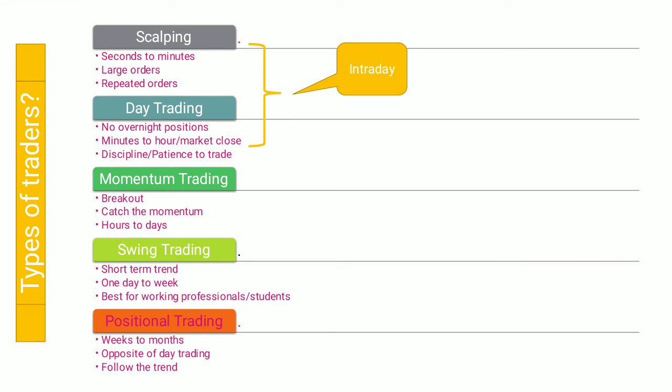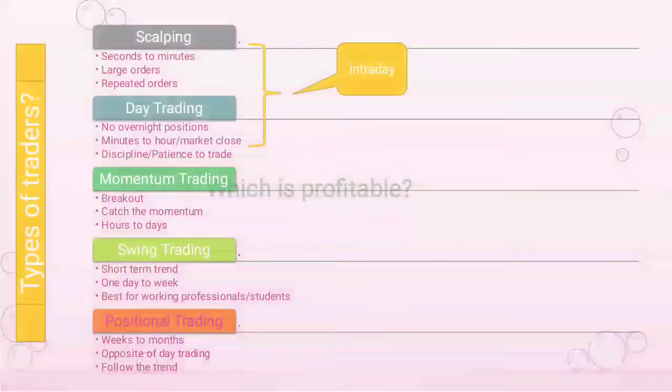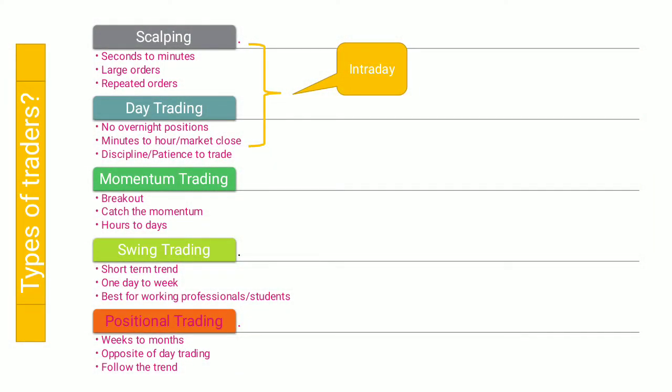Scalping and day trading are together called intraday trading — you buy and sell on the same day, earning a few percentage of profit. The next important type of trader is a momentum trader. These traders wait for a particular breakout — for example, if a stock is ranging between 100 and 105, they'll enter once the stock crosses 105 rupees. They then try to catch the momentum and wait for hours to days to earn that profit.